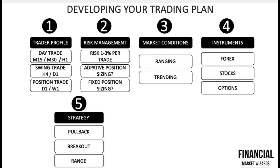Step five involves strategy, which is closely linked to market conditions. Once you define your market condition, it will largely determine your strategy. If your trading plan involves trending markets, you'll be looking at pullbacks to support or retracements, or trading breakouts. If you are trading a ranging market, your strategy will revolve around the range — and you need to decide whether you trade both ends of the range or only follow the overall trend direction.